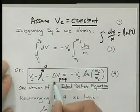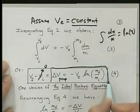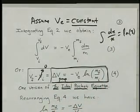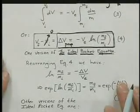And this is one version of what's called the ideal rocket equation. Ideal meaning that the specific impulse is constant. Things are very simple.